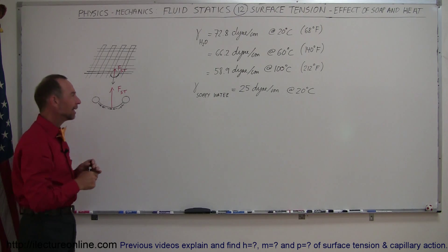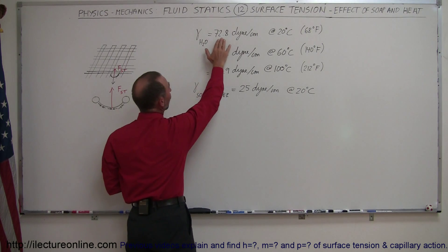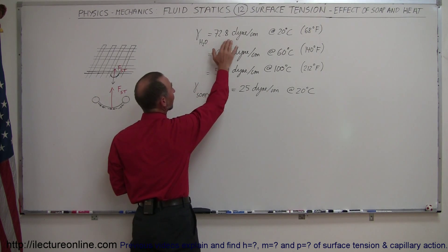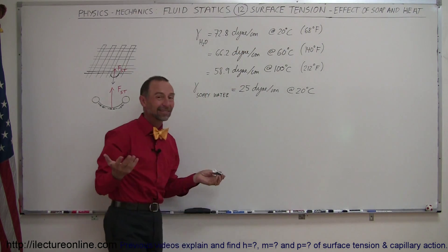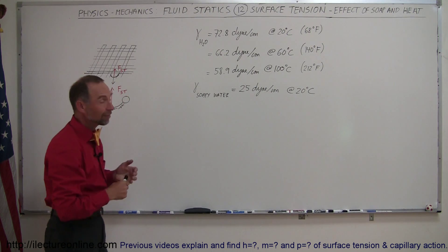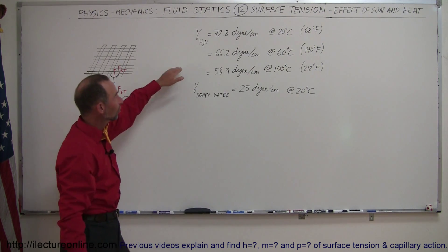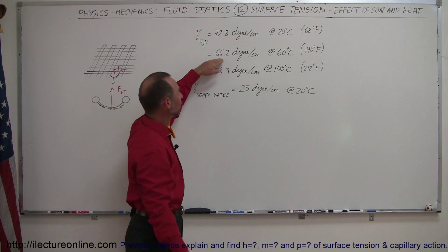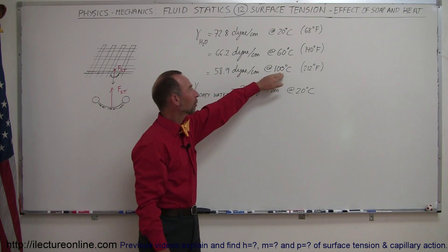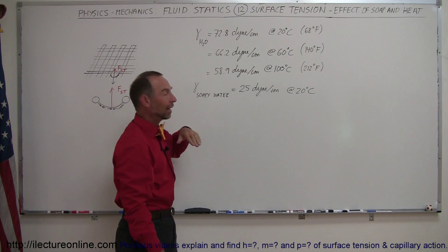Another way to do that is to heat up the water, because as we can see, the coefficient of surface tension for water at 20 degrees centigrade, which is 68 degrees Fahrenheit, room temperature, is 72.8 dynes per centimeter. But as you see, as you heat up the water, the surface tension gets smaller. At the boiling point of water, it's even less than that.